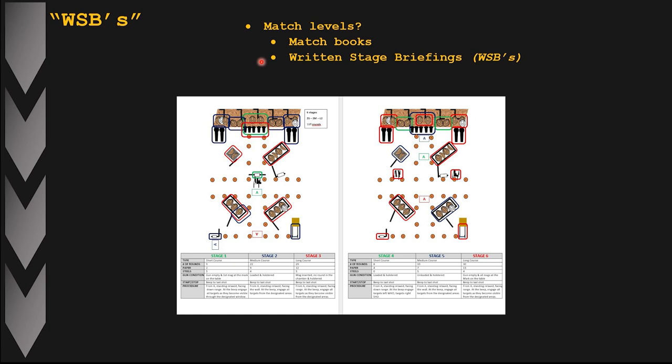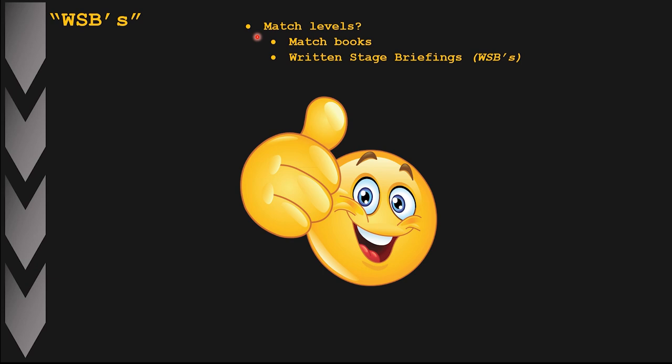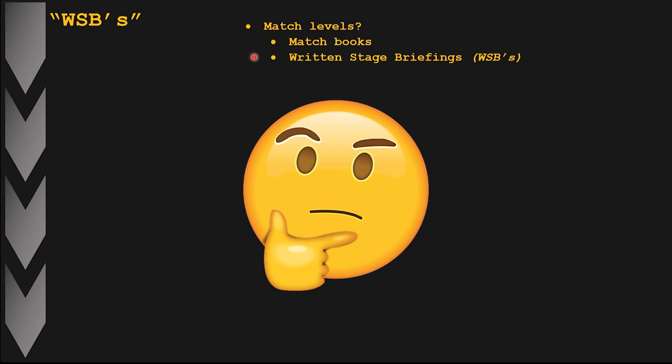At level two matches, serious professional organizers will make available in advance to all registered competitors the written stage briefings with all relevant information. However, I've also seen many level two matches where nothing is published in advance, which I regret — because it's particularly interesting for competitive shooters who know how to read and analyze written stage briefings and integrate that into their process. It may create an advantage and help with stage strategy.